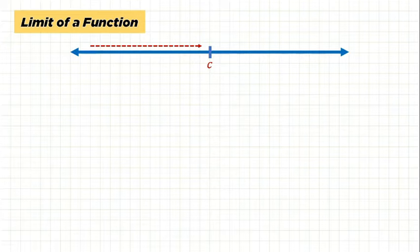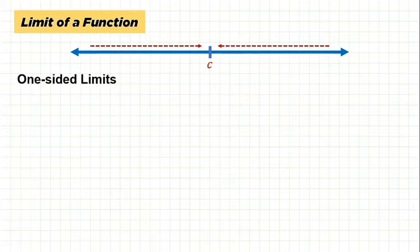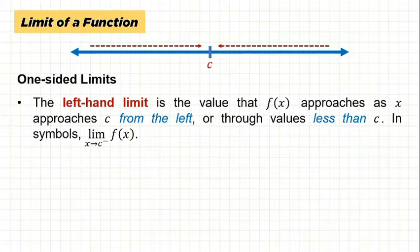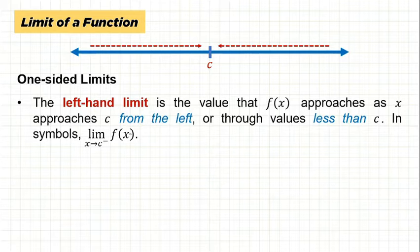Now, take note: on a number line, if c is located at a point, there are two ways for x to approach c. The first way is from the left of c — x approaches c from the left. The other way is if x comes from the right — x approaches c from the right. These are called one-sided limits. The left-hand limit is the value that f(x) approaches as x approaches c from the left, or through values less than c.